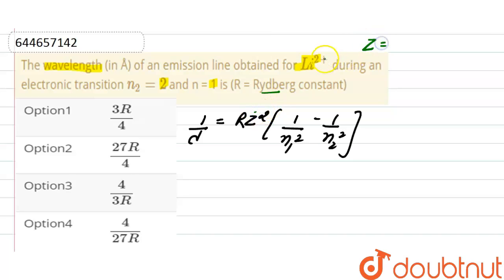So here R is the Rydberg constant, Z is the atomic number. The atomic number of lithium plus two is 3. N1 here is 1 and n2 is 2.